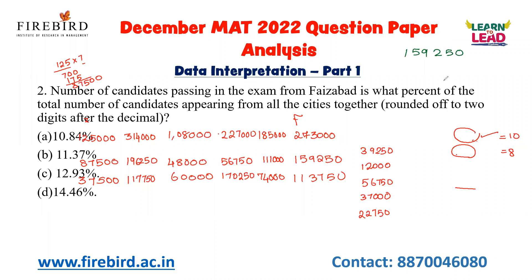The next question asks for the total number of candidates appearing from all the cities together. Adding all the candidates gives 12,32,000. The question then asks what percentage 1,59,250 is of 12,32,000. 10% of 12,32,000 is 1,23,200. Adding 1% increments of 12,320, going past 11% and towards 12.93%. So the answer is approximately 12.93 percentage.